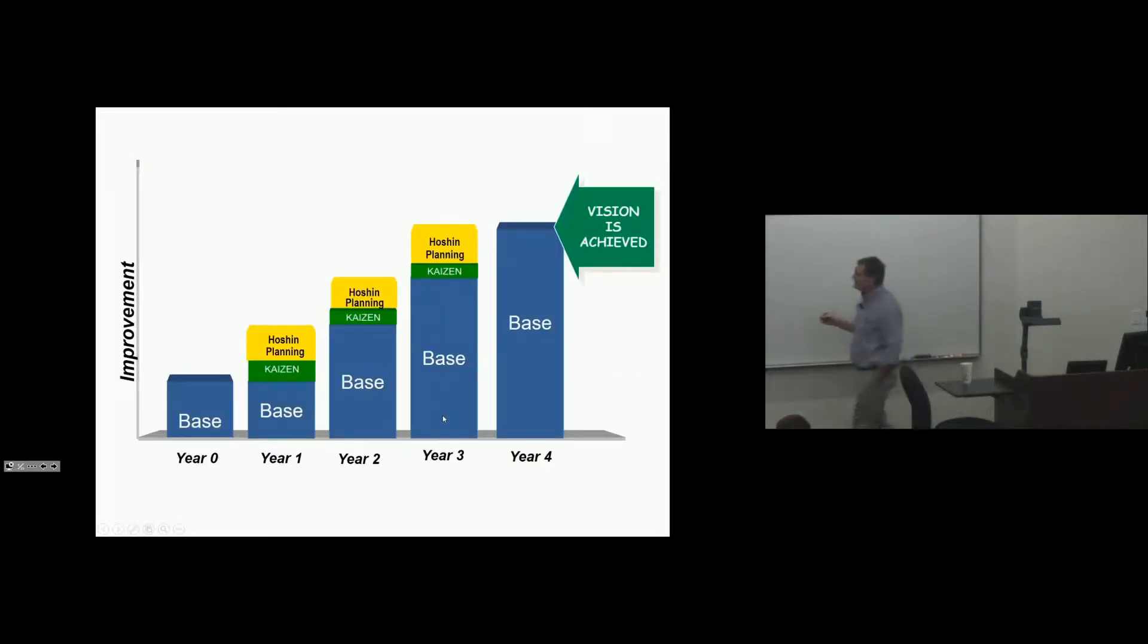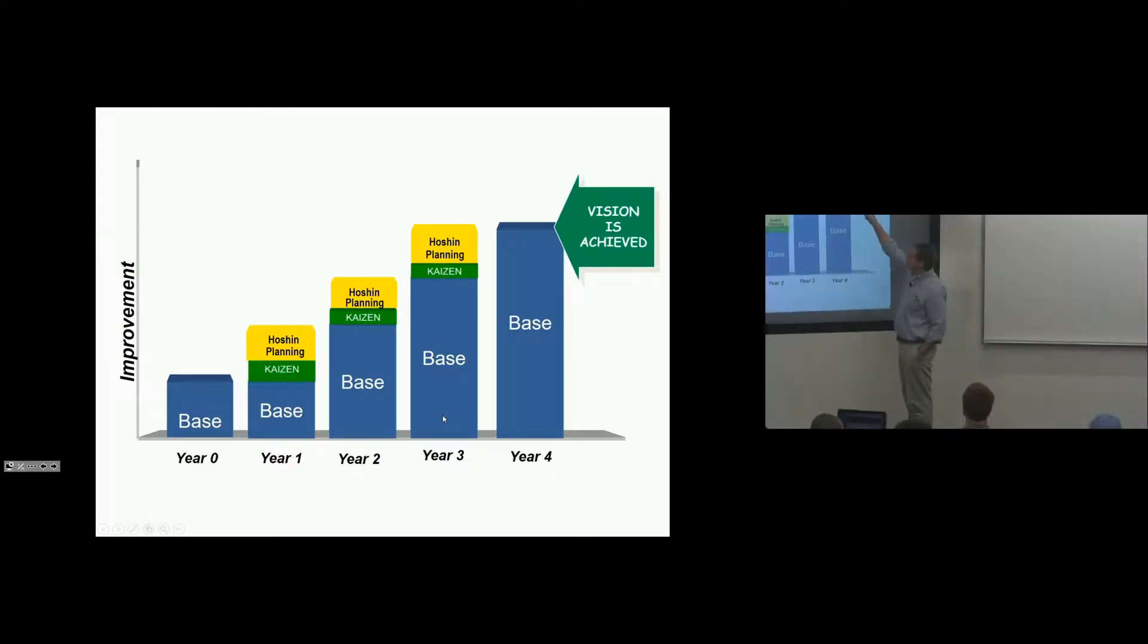So this is kind of a graphic of what that means. So if I've got out four years, I want to achieve this vision. Year one, I work daily, weekly, monthly.